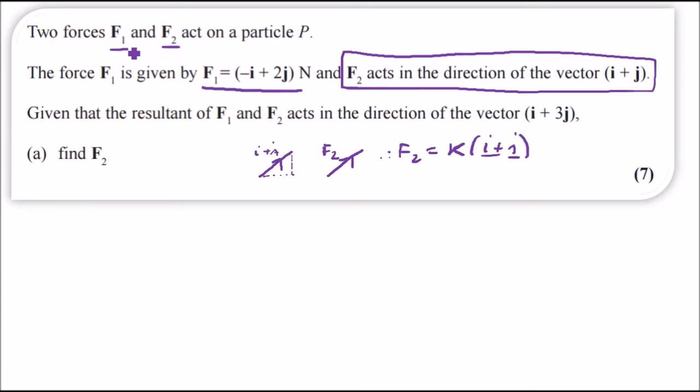We also know that given that the resultant force of F1 and F2 acts in the direction of the vector i plus 3j, so again in fact this is the same thing. So now we're going to have another vector, we know that the direction is i plus 3j.